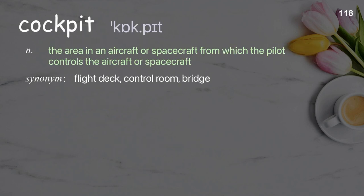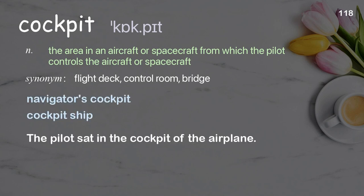Cockpit: the area in an aircraft or spacecraft from which the pilot controls the aircraft or spacecraft. Examples: navigator's cockpit, cockpit ship. The pilot sat in the cockpit of the airplane.